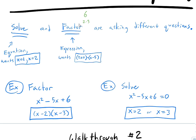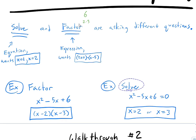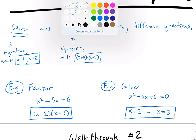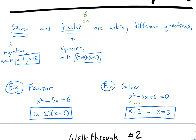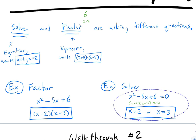Factor and solve are totally different questions. When it says 'factor,' there's no equal sign — there's no way to move everything to one side equals zero. Instead, we just use the Xbox method and that's our answer. But when it says 'solve,' factoring is just a middle step. We then set each factor equal to zero and find the values that make the equation true.